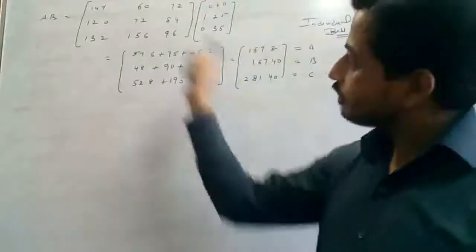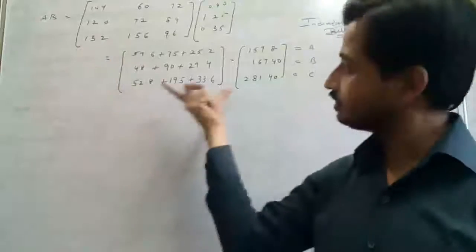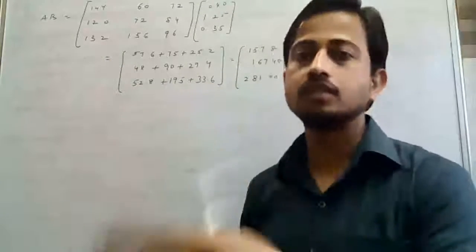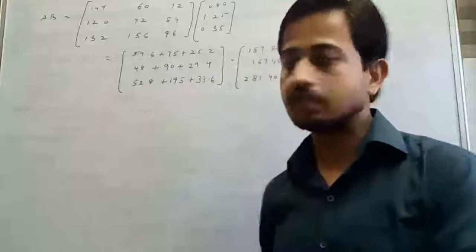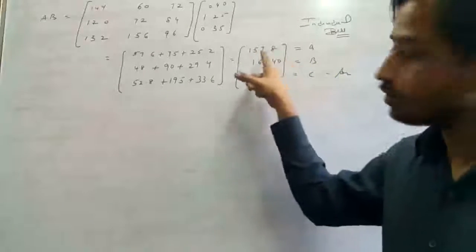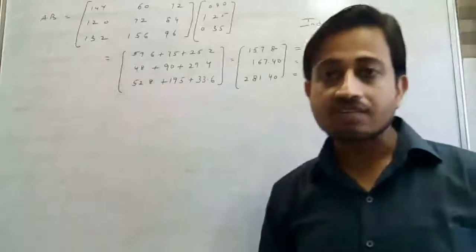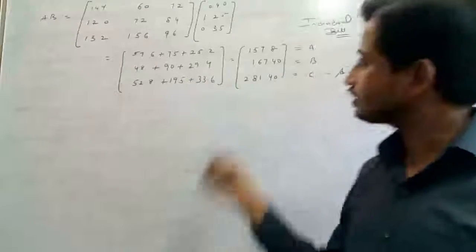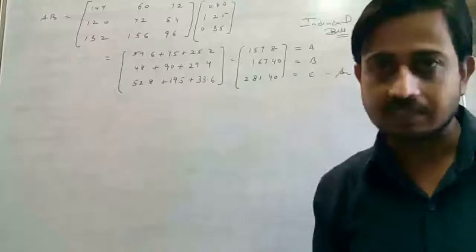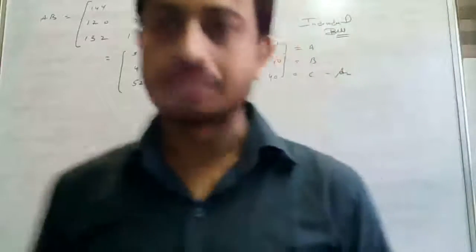Multiplying both matrices A and B, we get: A will have to pay 157.80 rupees, B will have to pay 167.40 rupees, and C will have to pay 21.40 rupees. Please make a note. Now we proceed to our next question.